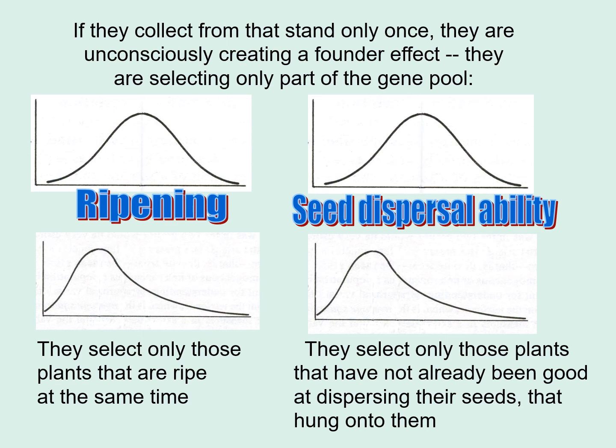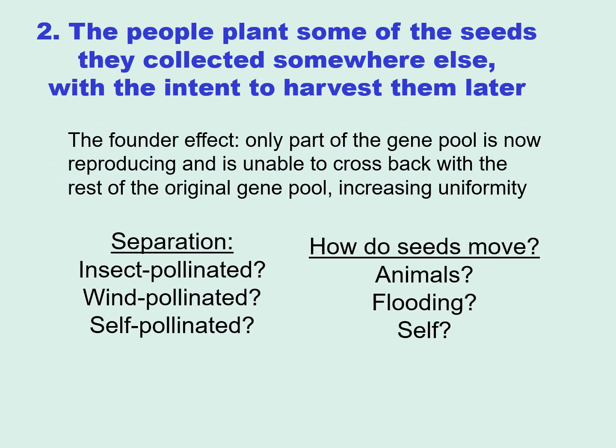You've selected only those plants that are ripe at the same time and that hung onto their seeds. Now if you ate those seeds, domestication is not going to occur — but if you save those seeds and plant them, particularly somewhere else with the intent to harvest them later, you have created a founder effect. Only part of the gene pool is now reproducing, and because you've taken them away from the original population — you being a mobile Archaic person — those plants are now unable to cross back with the rest of the original gene pool, which would increase uniformity. Weeds have greater genetic variability, and eventually domesticates have less genetic variability and more uniformity.